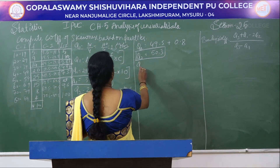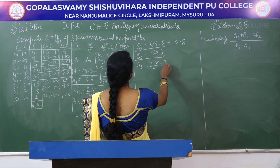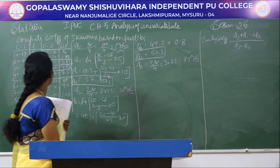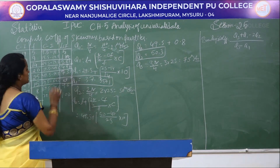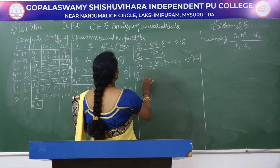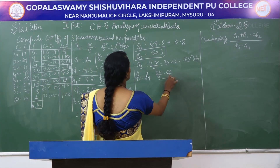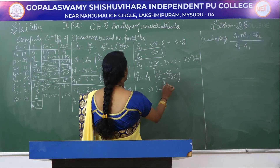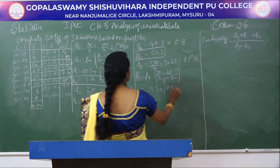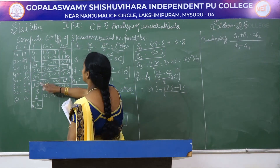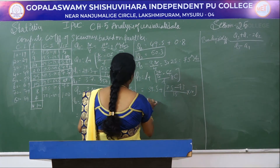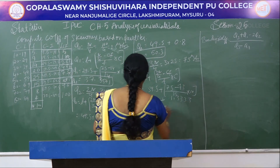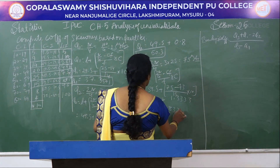Next, calculate Q3. Q3 is 3 times N by 4 = 3 into 25 = 75th observation. The 75th observation falls in LCF 88, so we block that interval. Q3 equals L plus (3N/4 minus CF) divided by F, into C. This is 59.5 plus (75 minus 73) divided by 15, into 10. Q3 equals 59.5 plus 1.3333, so Q3 is 60.8333.